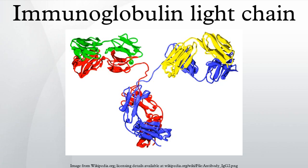These domains consist of one constant domain and one variable domain that is important for binding antigen. The approximate length of a light chain protein is from 211 to 217 amino acids.